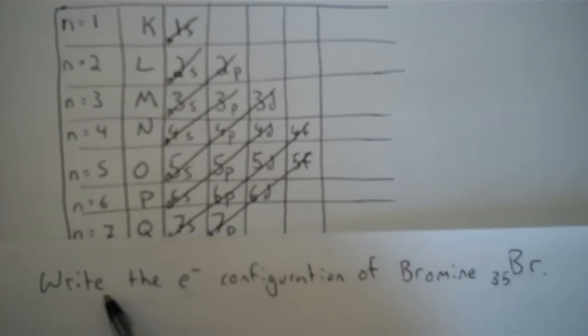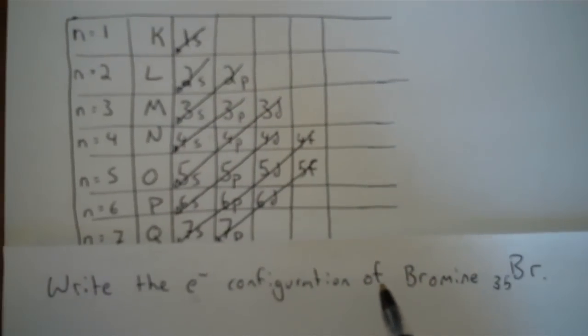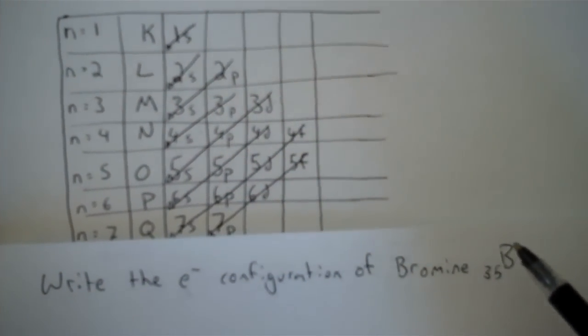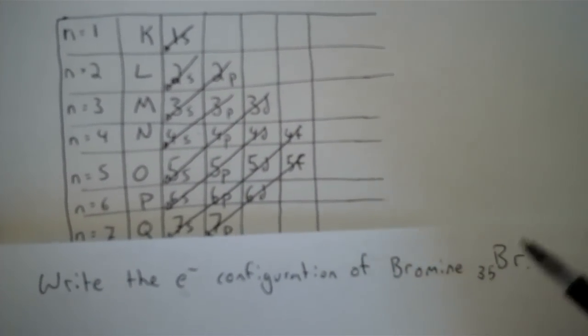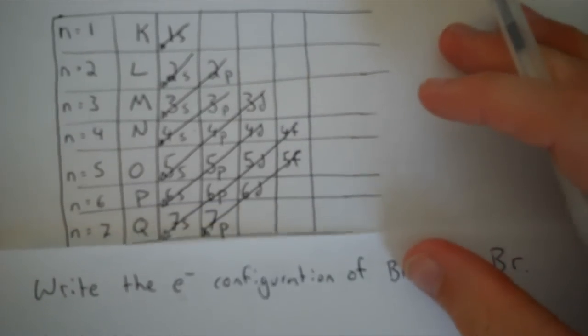My question is to write the electron configuration of bromine, symbol Br, and the Z is 35. I've already drawn my diagonal rule here.